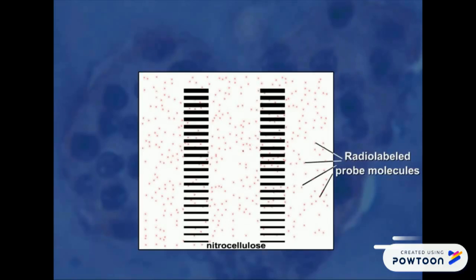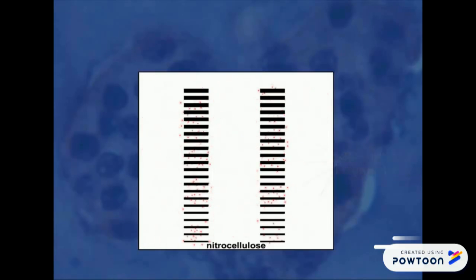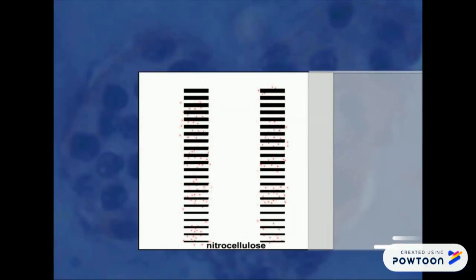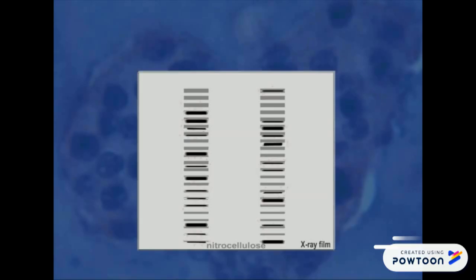The probe molecules hybridize to DNA fragments containing the repeat sequence, and excess probe molecules are washed away. The blot is then exposed to an x-ray film. Fragments of DNA that have bound the probe appear as dark bands on the film.